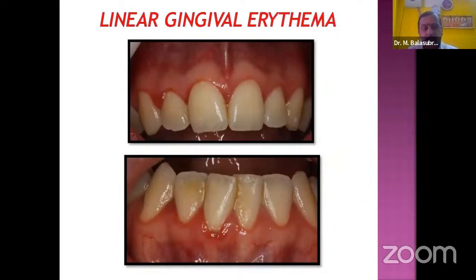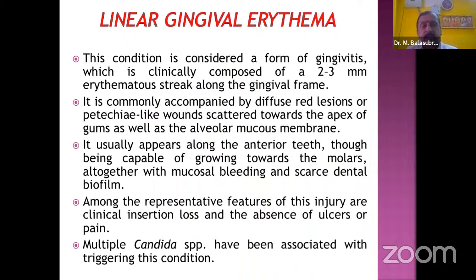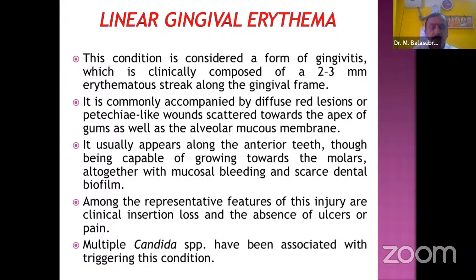Linear gingival erythema is considered a form of gingivitis. It is clinically composed of a 2–3 mm erythematous streak along the gingival margin, commonly accompanied by diffuse red lesions scattered towards the apex of the gums and alveolar mucous membrane. It usually appears along the anterior teeth, sometimes extending towards the molars, with notable bleeding. Representative features include clinical insertion loss and absence of ulcers or pain, and multiple Candida species have been associated with triggering this condition.